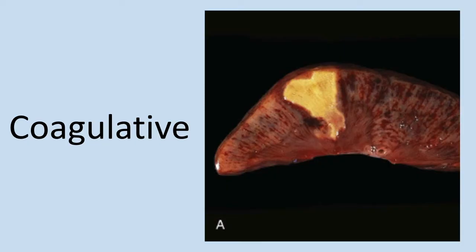The first of these types of necrosis is known as coagulative necrosis. When this occurs, the architecture of the dead tissue is actually preserved for a few days and is quite firm to the touch. There is denaturation of structural proteins as well as enzymes within cells, and this denaturation blocks proteolysis of the dead cells. With no functional enzymes to break down the surrounding tissue, the architecture is preserved. Ultimately these are cleaned up via phagocytosis by leukocytes. This is often caused by vessel obstruction leading to ischemia, and it happens throughout the body everywhere except the brain.